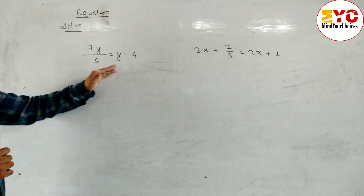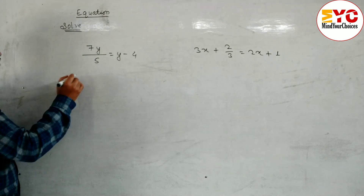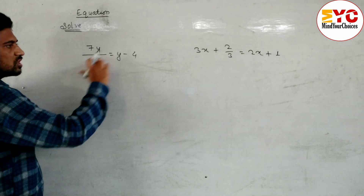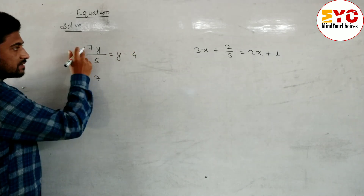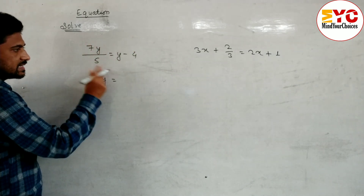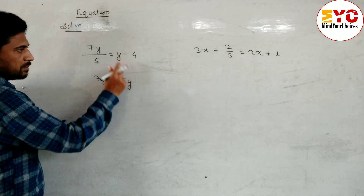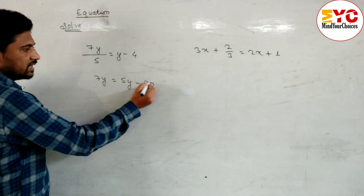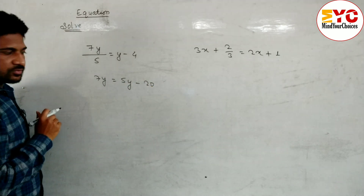7x by y is equal to (y minus 4) over 5 — a little bit different from question number 2. So first of all we have to cross multiply. 7y is here, write 7y is equal to 5 into (y minus 4): 5y minus 5 into 4 is 20. Hope you understand up to here.